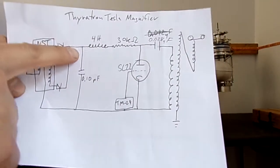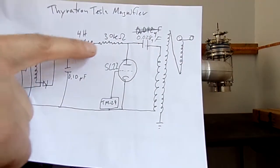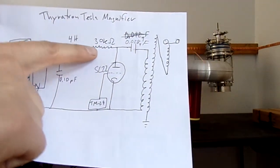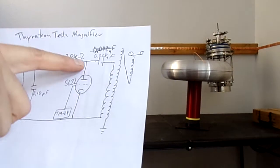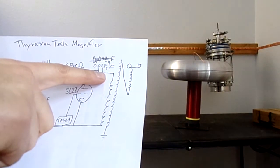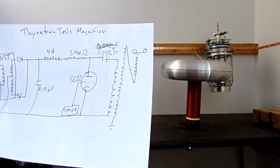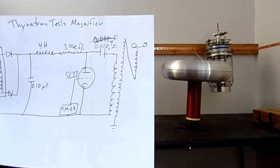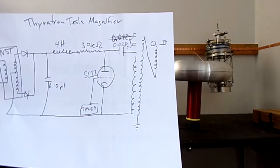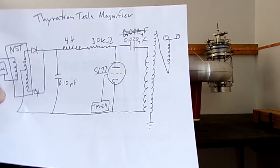And then from here this is our high voltage DC. We've got a 4 Henry choke, a 30 kilohm 100 watt resistor and that charges up our 0.028 microfarad tank capacitor. It's resonant with the secondary and primary.